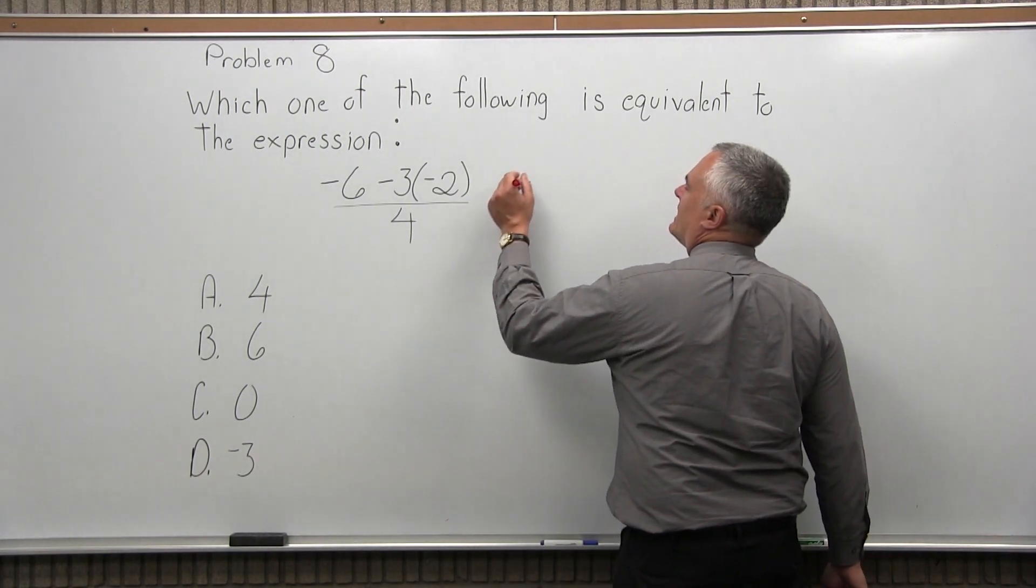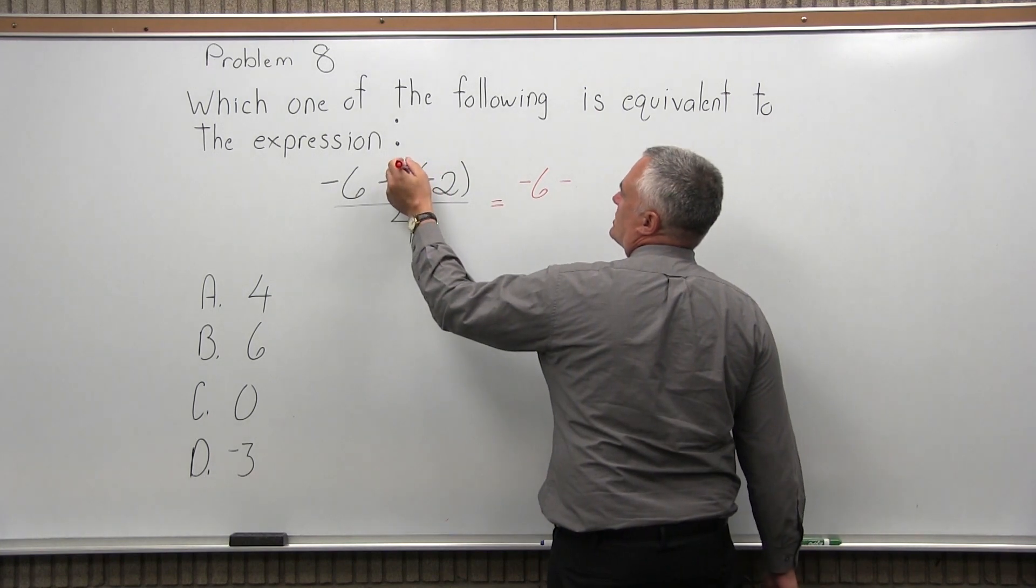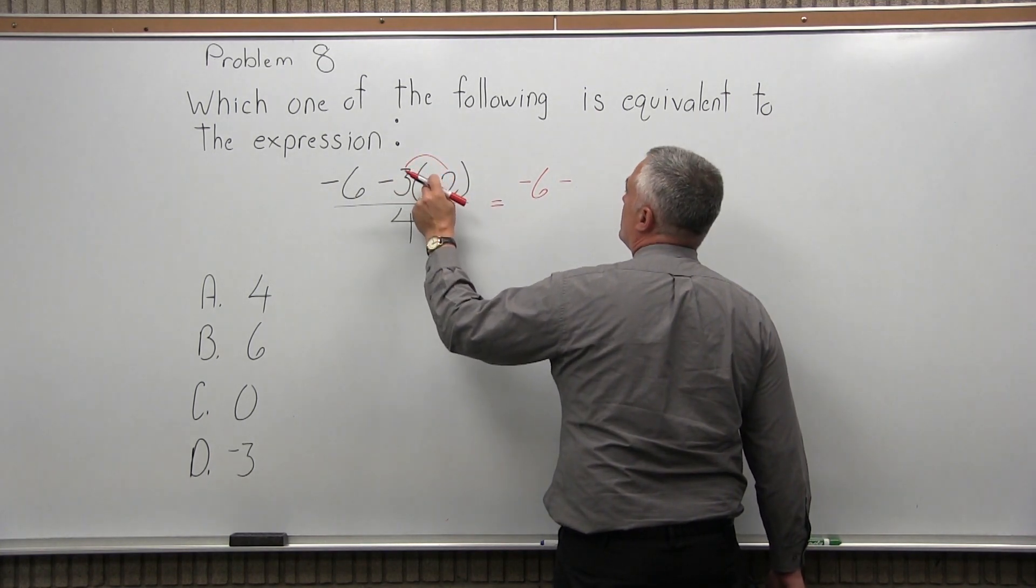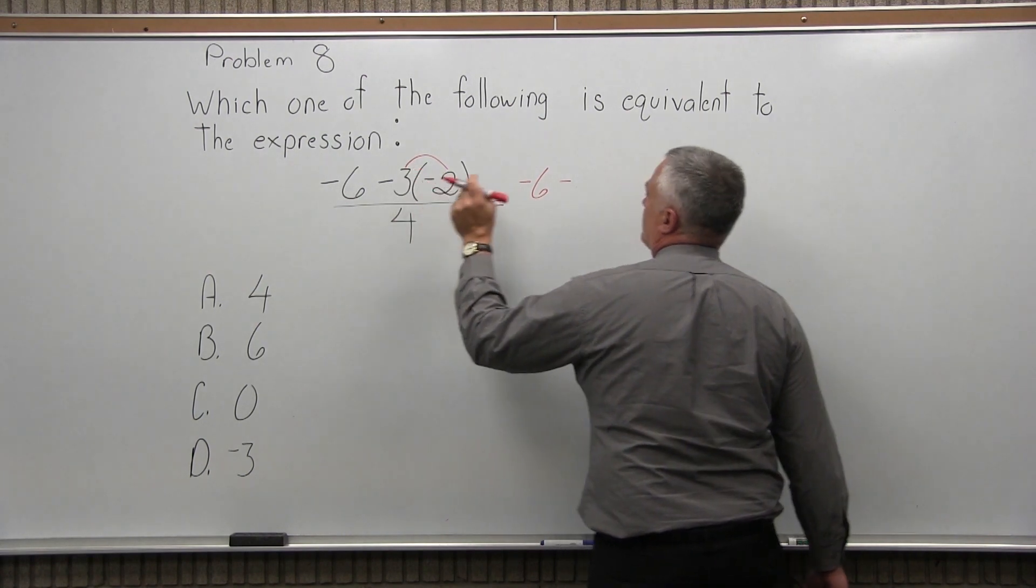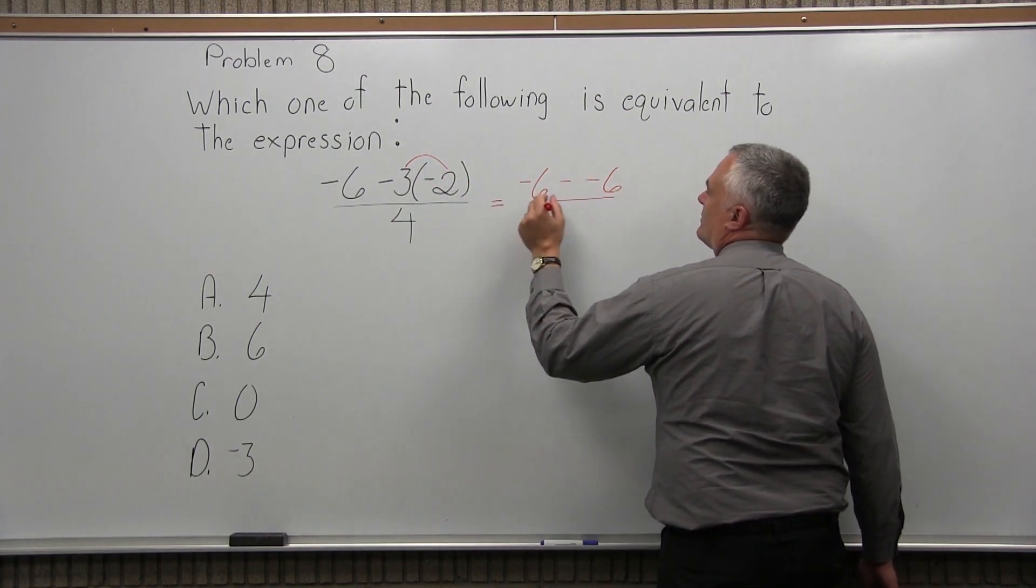So we're going to have negative 6 minus, so I'm thinking of this just as a 3, so I'm going to go 3 times negative 2. Now remember, a positive times a negative, you're going to get a negative 6. You still have the 4 in the denominator.